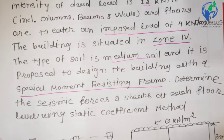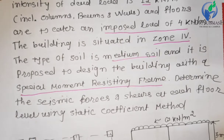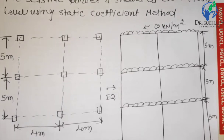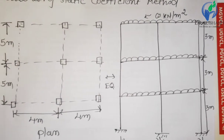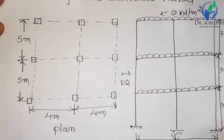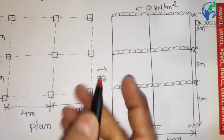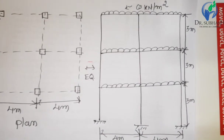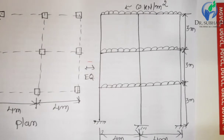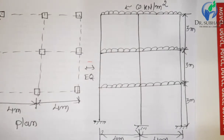Now you can see the plan and elevation given in our data. The plan shows 8 meters in the X direction and 5 meters in the Y direction, giving a total plan dimension of 10 by 8. There are 2 bays. The earthquake direction is shown. In the elevation, 3 stories are given; every story has a height of 3 meters and 4 meters width. W is the total live load plus dead load in kilonewtons per meter square, floor-wise.